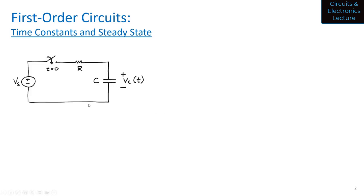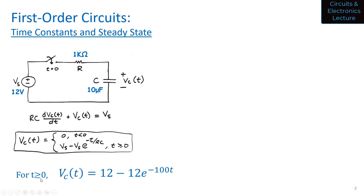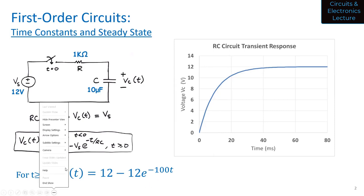This is the circuit we just solved. Suppose V_S is 12 volts, R is 1 kΩ, and C is 10 μF. Filling those values into the solution for T greater than or equal to zero, you get 12 minus 12 e to the minus 100T. If you plot that, you see the exponential rise — voltage across the capacitor versus time, starting at one value and converging at another. That will always be the case for a first-order circuit with a transient response. Every voltage that changes will have this exponential characteristic — it either rises or falls, starting at one value and going to another.